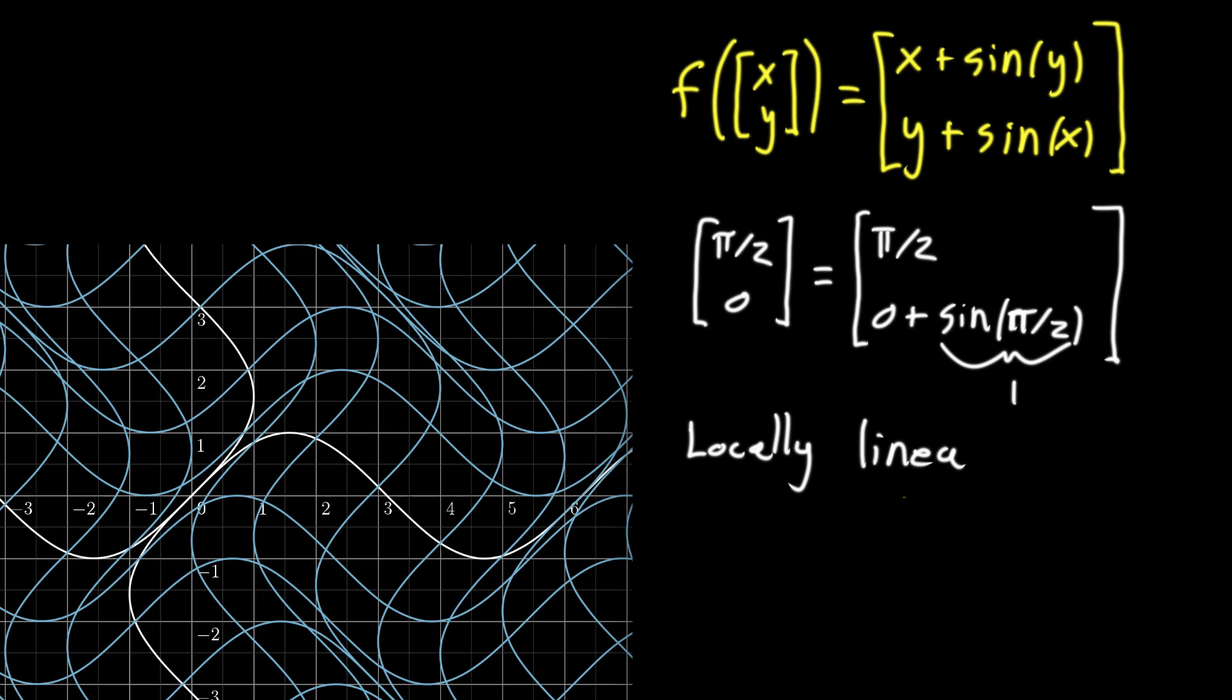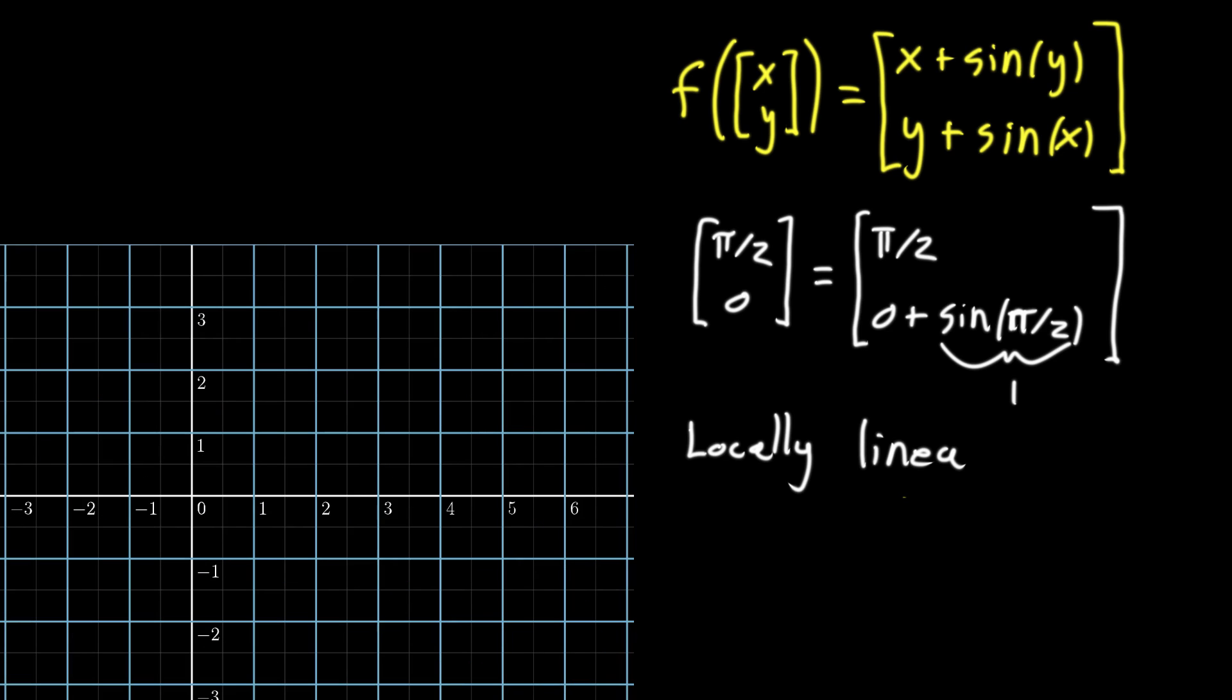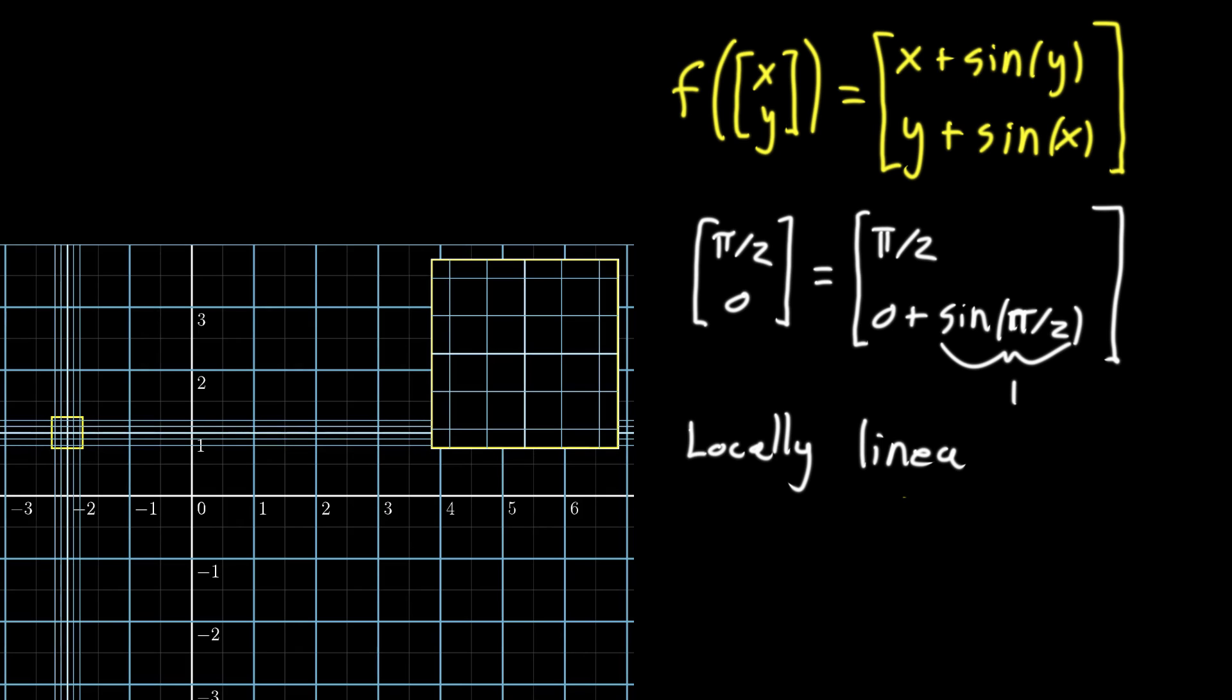And what that means is if I was to take our initial setup and then zoom in on a given point. So I'm going to zoom in around this point on the left here and this box kind of in the upper right just shows the zoomed in version of that.